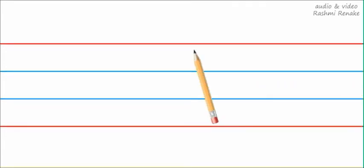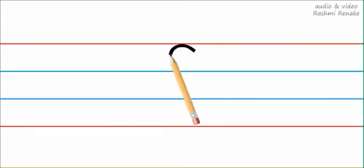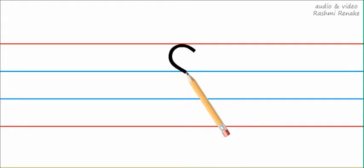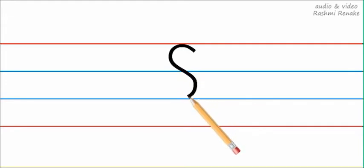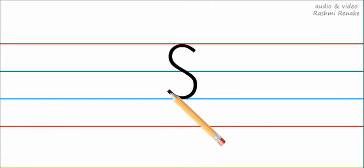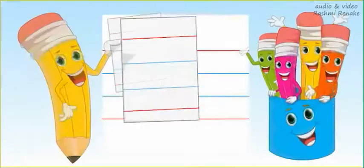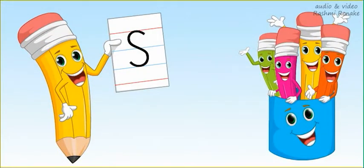Let's try it again. Start from the top red line, make a small right curve till the first blue line, then a little slant line, and then make a left curve to the second blue line. This is capital letter S.